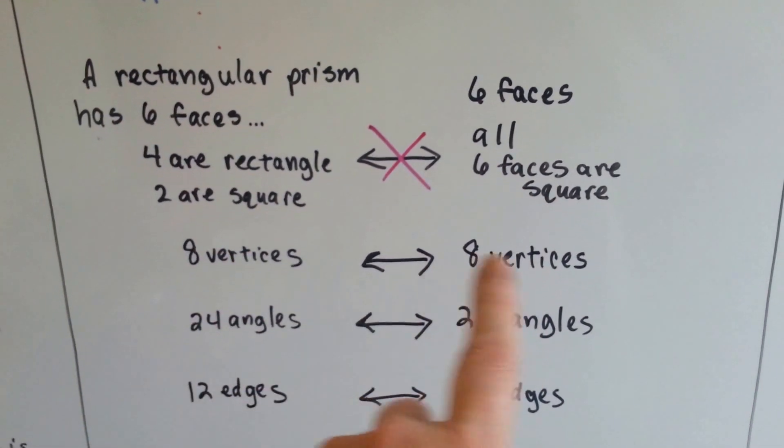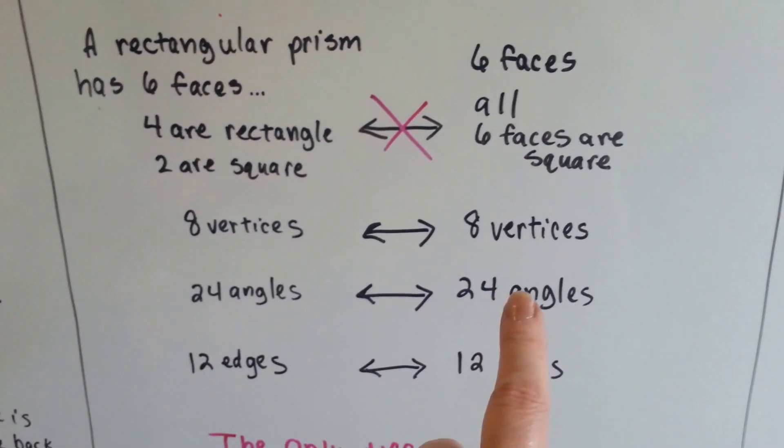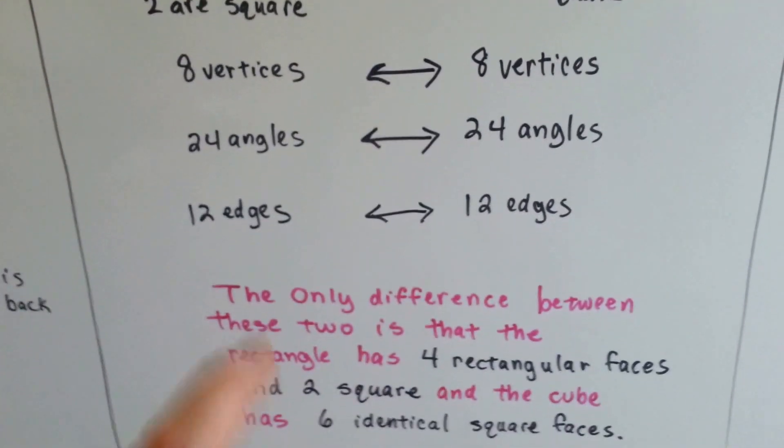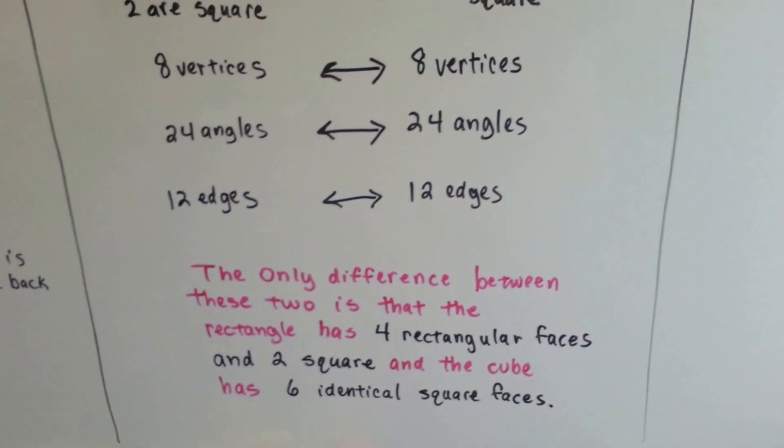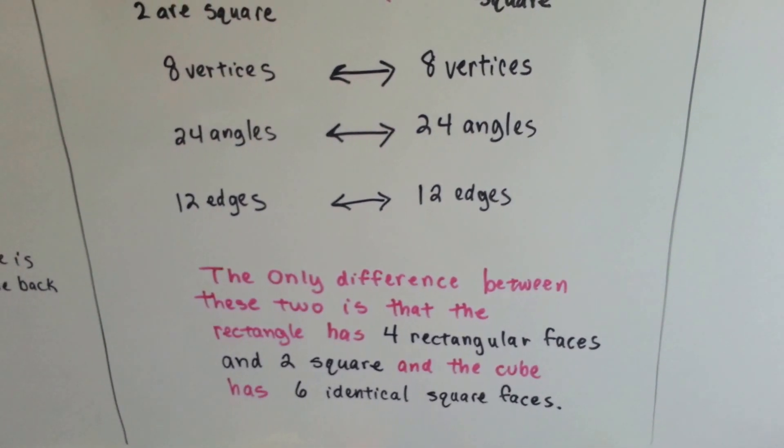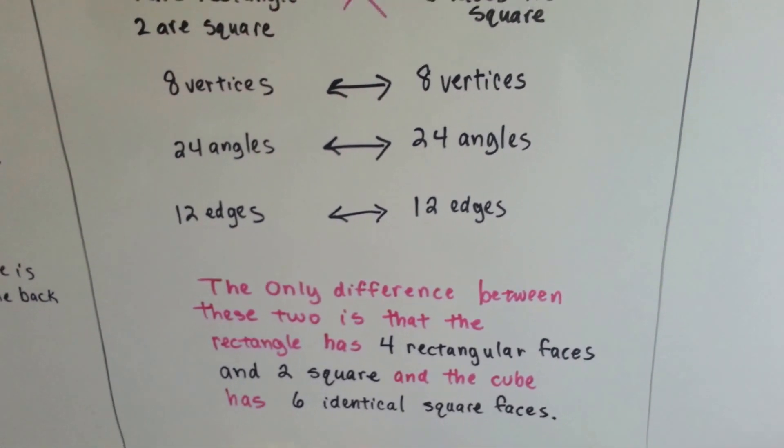They both have eight vertices, they both have twenty-four angles, they both have twelve edges. The only difference between them is that the rectangular prism has four rectangular faces and two square ones, and the cube has six identical square ones.